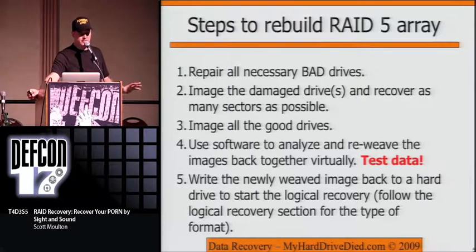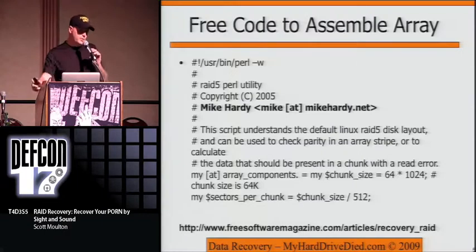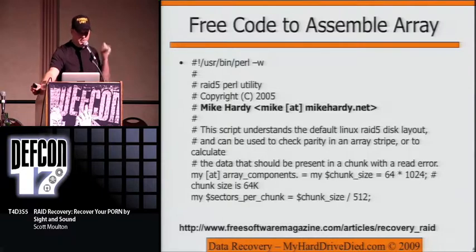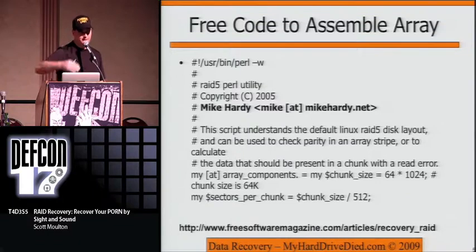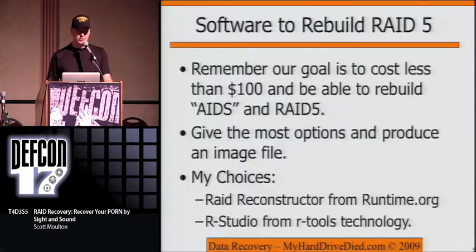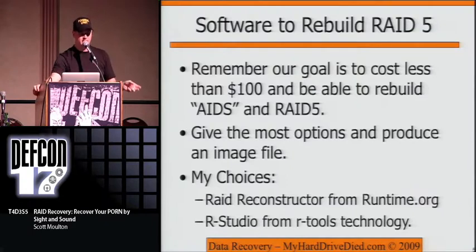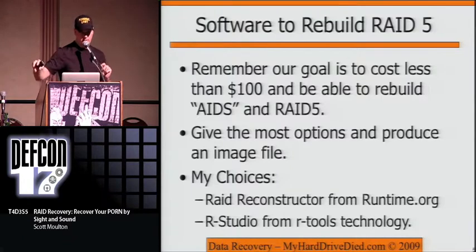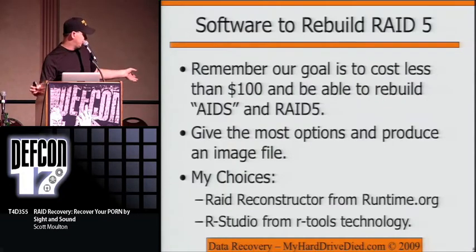Once you finally have them assembled, you can go back. For something free: there's a Perl script someone wrote to help with this — if you search for Mike Hardy you'll find it. It steps through the drives and you modify it according to your array, though you still need to know something about the configuration. For our goal of less than $100 to rebuild, there are two primary choices: RAID Reconstructor from Runtime.org at $99, and RStudio from RTools at $79 for their standard edition, which does all file systems except XFS and ZFS.